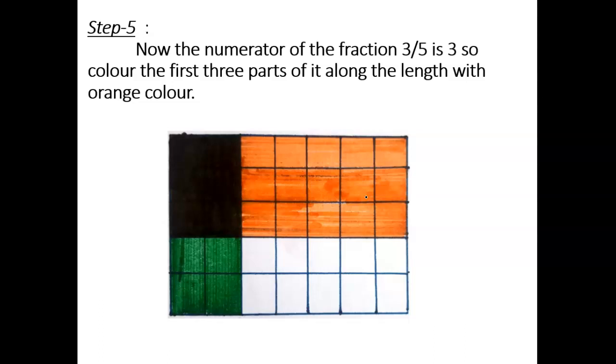6 boxes are common in both the shaded regions, so it gives the numerator of the resulting part that is what we get after multiplication.